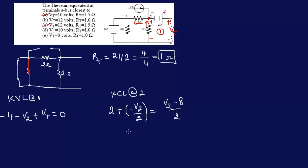Now we can find V2. We have 4 minus V2 equals V2 minus 8, so V2 equals minus 12 over minus 2, which equals 6. So V2 is 6 volts.